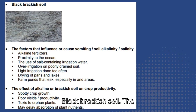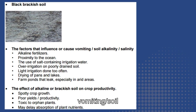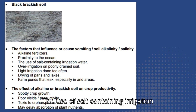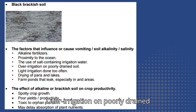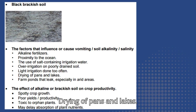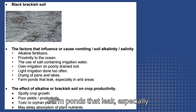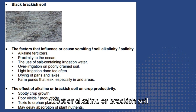Factors that influence or cause soil alkalinity and salinity: alkaline fertilizers, proximity to the ocean, the use of salt-containing irrigation water, over-irrigation on poorly drained soil, light irrigation done too often, drying of pans and lakes, and farm ponds that leak especially in arid areas.